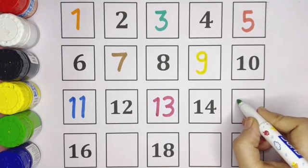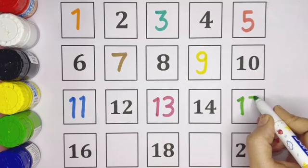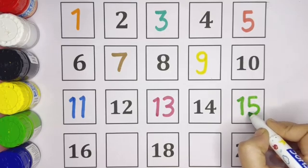Fourteen, fourteen. Then fifteen, one five, fifteen. The missing number is fifteen.